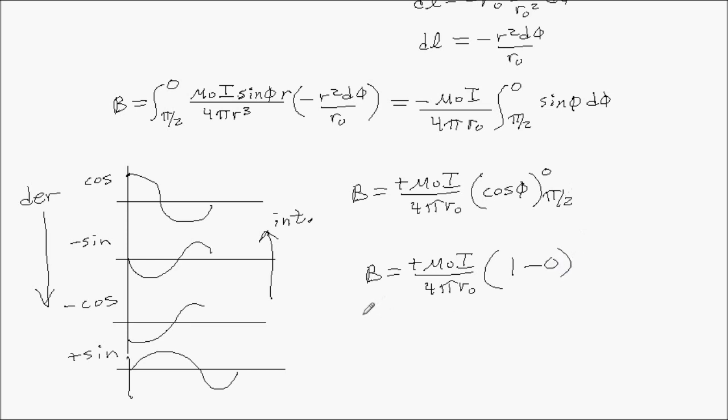Which tells me the magnetic field due to half the wire is mu naught i over 4 pi r naught. Before, we had the magnetic field due to the whole wire equaled mu naught i over 2 pi r. Which means this one is half as much as that one.